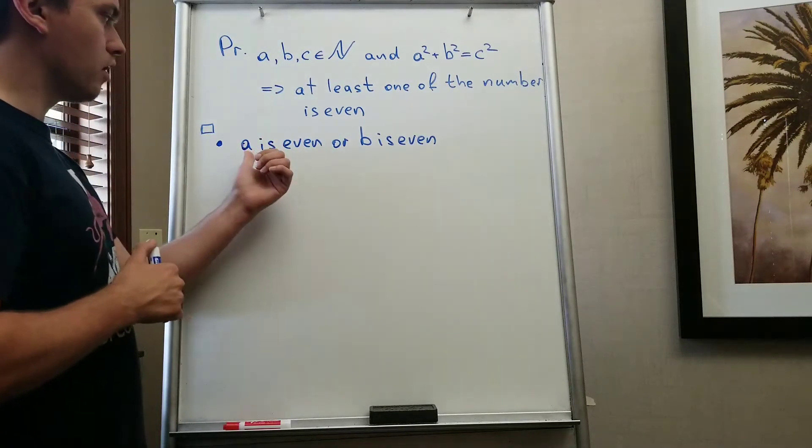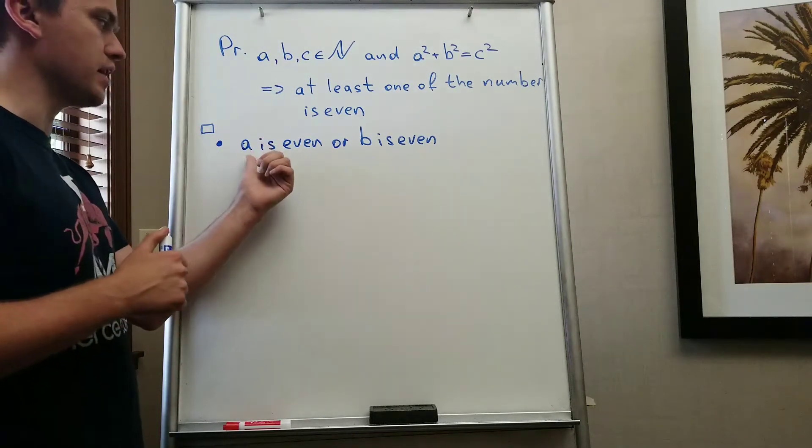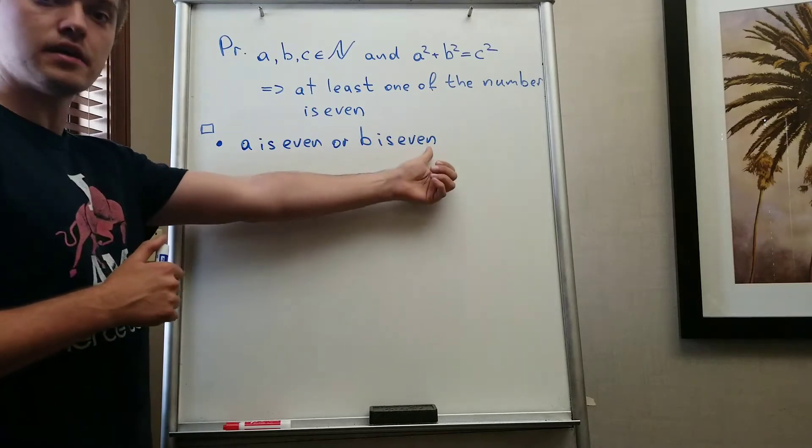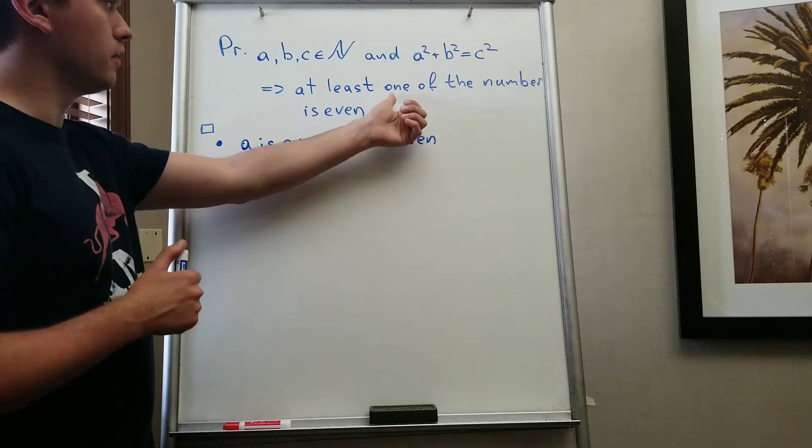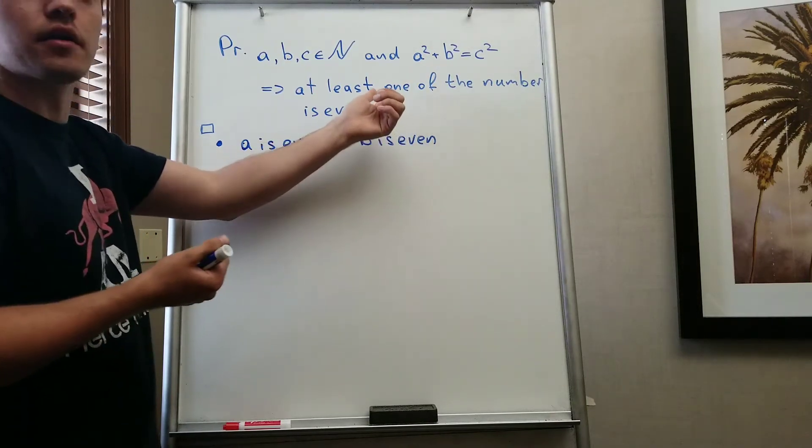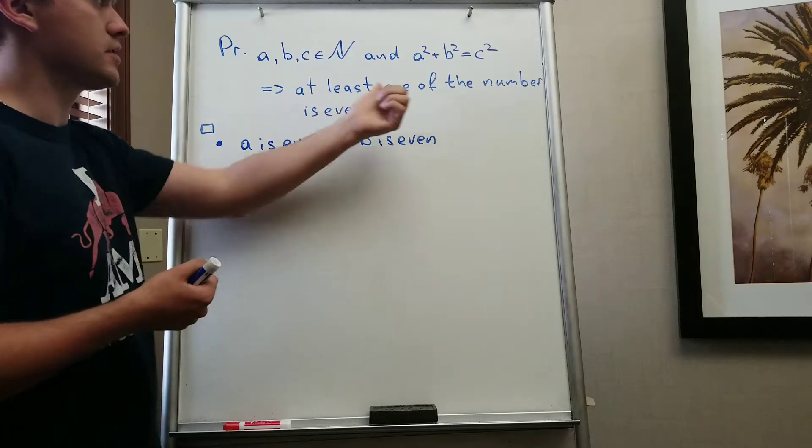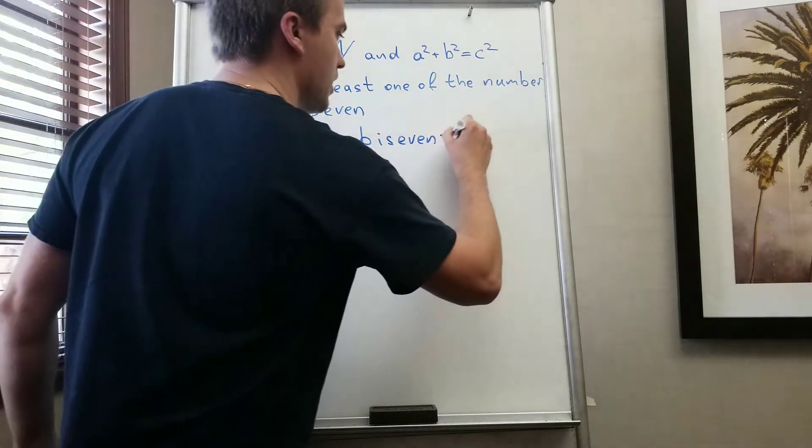If I'm going to assume that a is even or b is even, then we are done. Why? Because our goal is to have at least one number is even.